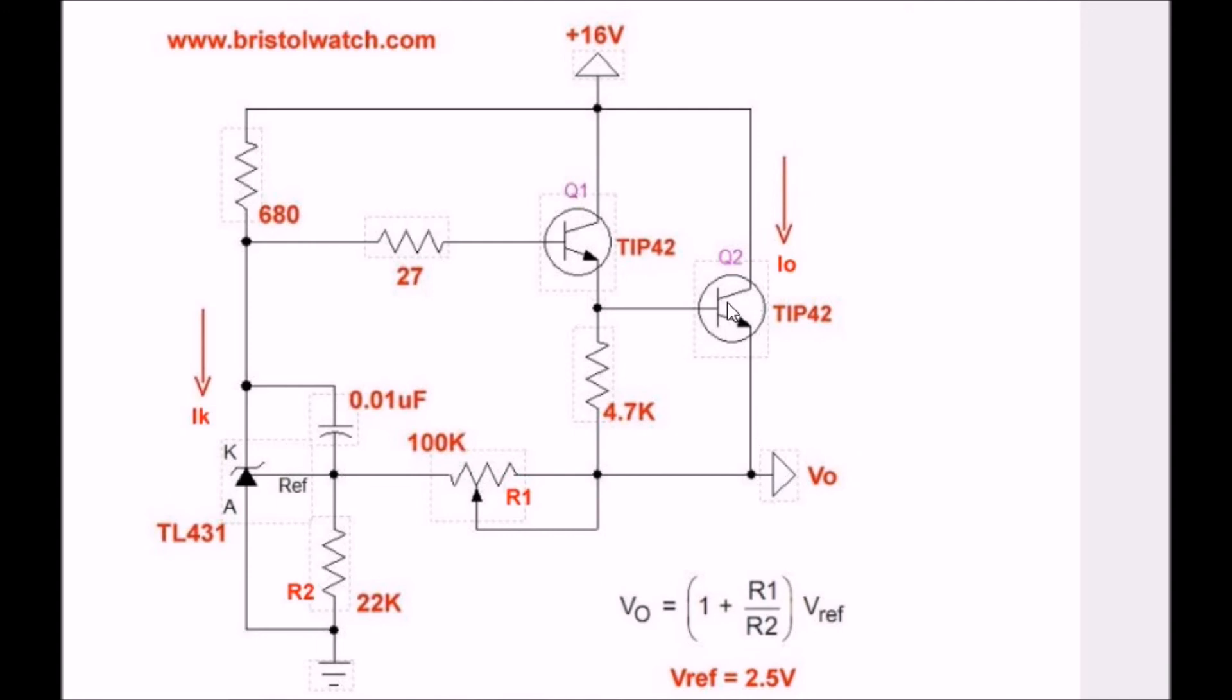Most of the current is being dropped through Q2, and you need to heatsink it, as I showed in the video, because it will get hot.